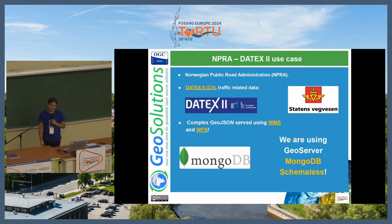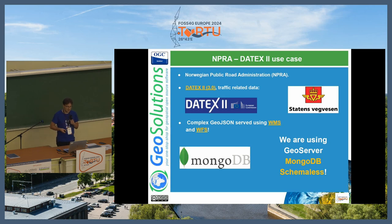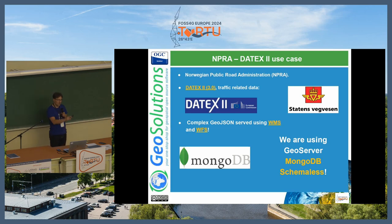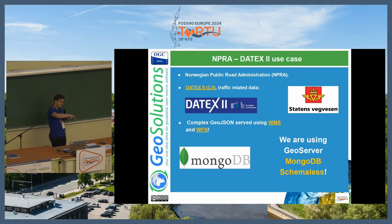Another example is NPRA — the Datex 2 use case. NPRA is the Norwegian Public Road Administration. They have a complex Datex 2 data store that they wanted to map out using GeoJSON, WMS, and WFS. This is a different use case because they didn't go through Smart Data Loader and then Feature Templating. They already have a complex model stored in MongoDB as complex JSON documents that just don't match what they want in output. So Feature Templating is doing complex-to-complex mapping, and in that case we can also map back to the original MongoDB structure and throw the filter at MongoDB.